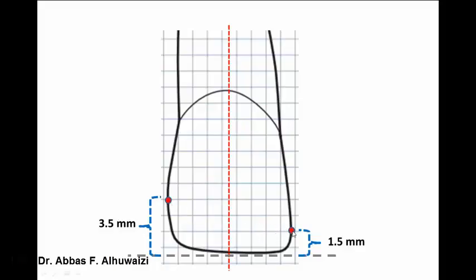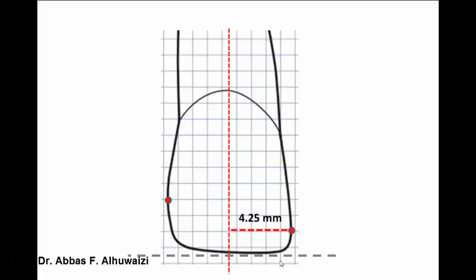The width of the crown between these two points is 8.5 mm. Therefore, it is 4.25 mm from the mesial peak of curvature to the midline, and 4.25 mm from the distal peak of curvature to the midline.